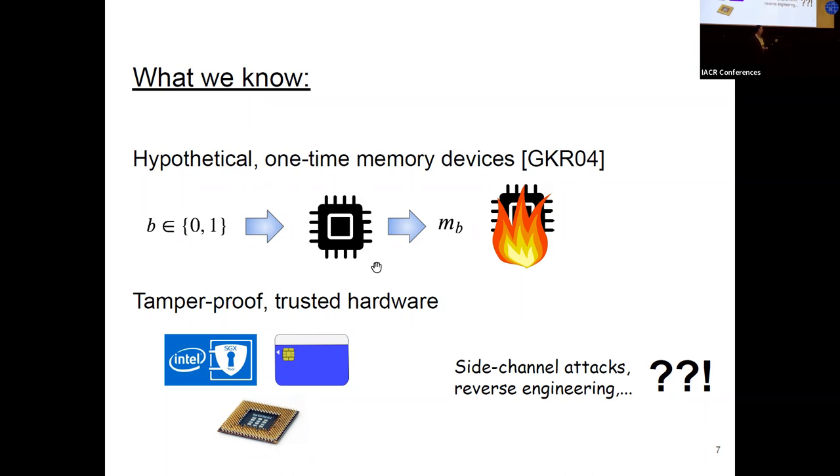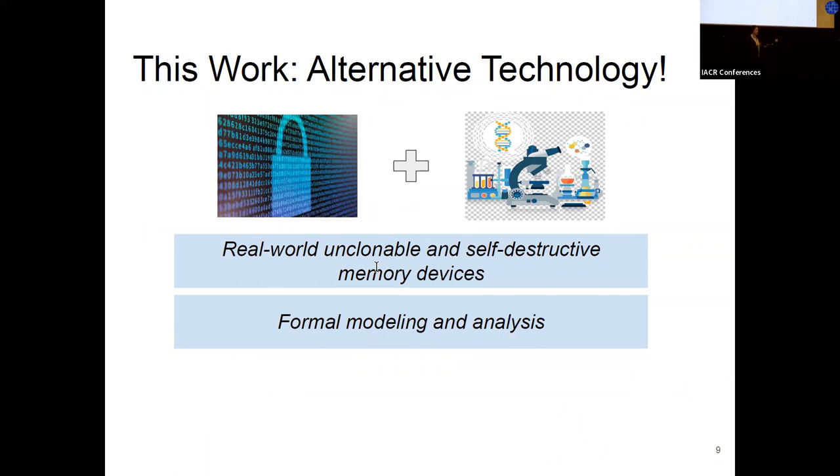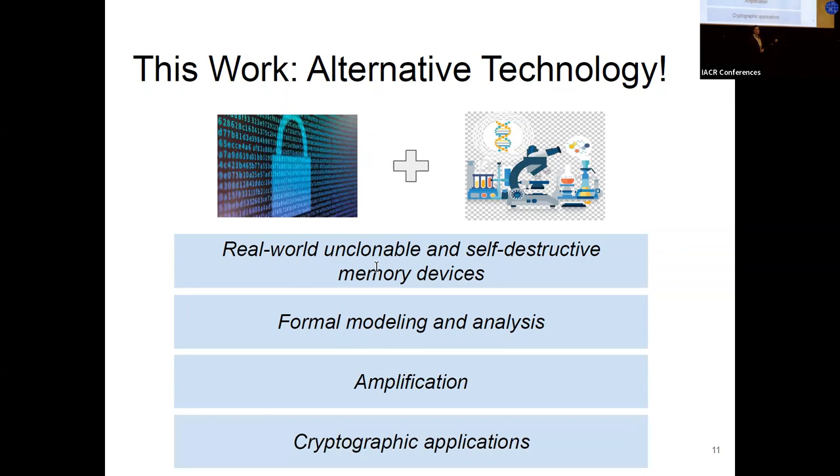So we wondered if we can build these gadgets using alternative hardness assumptions. And to achieve this goal, we joined forces with top-notch and brave biologists to find alternative technology to build real-world, unclonable, and self-destructive memory devices. We do that in a rigorous way, laying down formal modeling and analysis of the capabilities and security guarantees that we can achieve. We also introduced several cryptographic and algorithmic techniques to amplify the weak properties of these devices in order to build provably secure cryptographic applications.